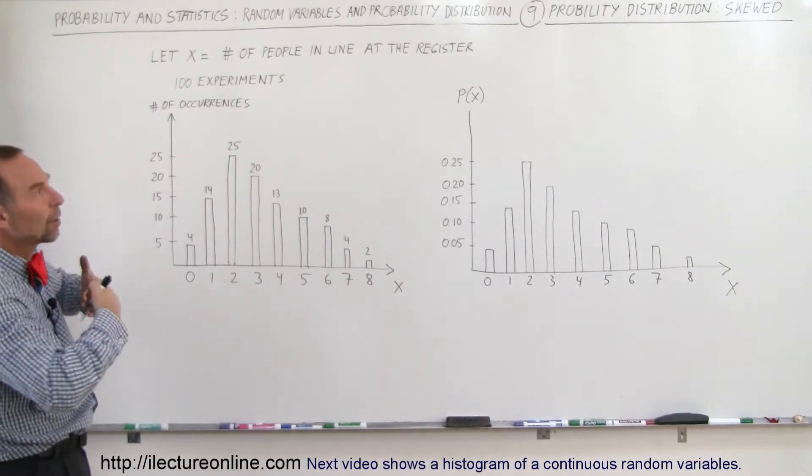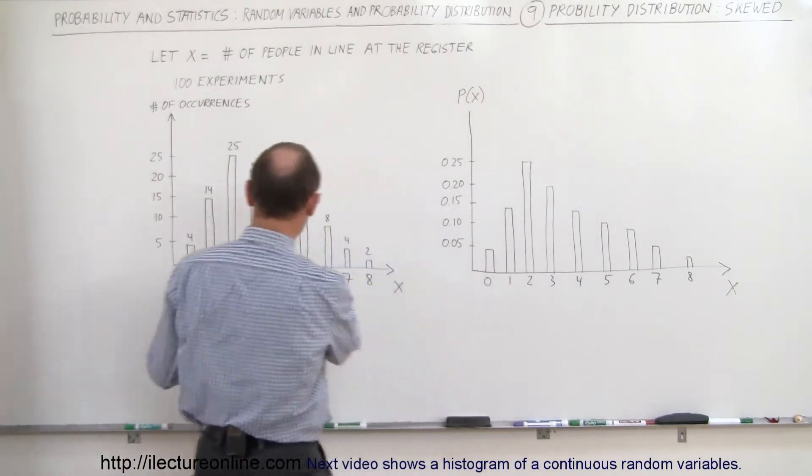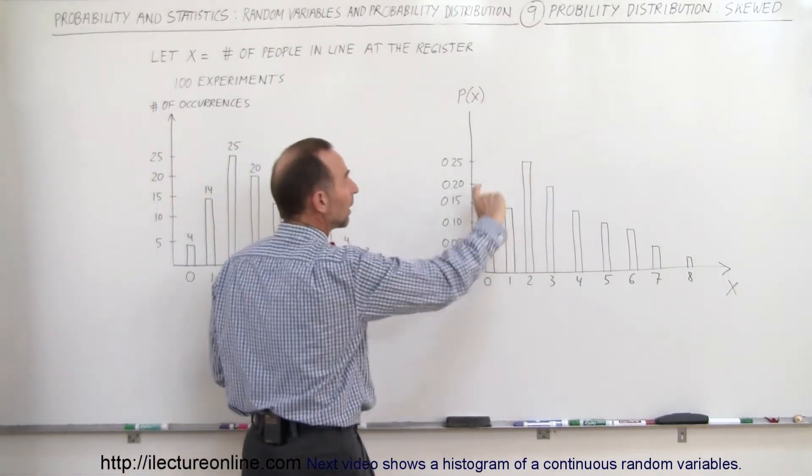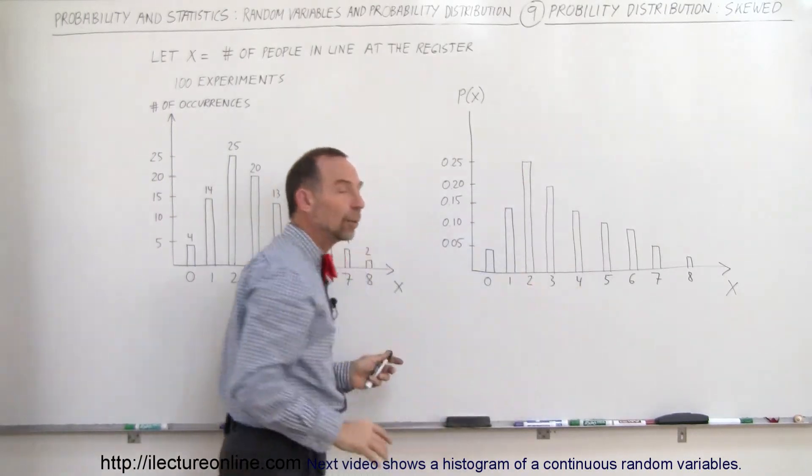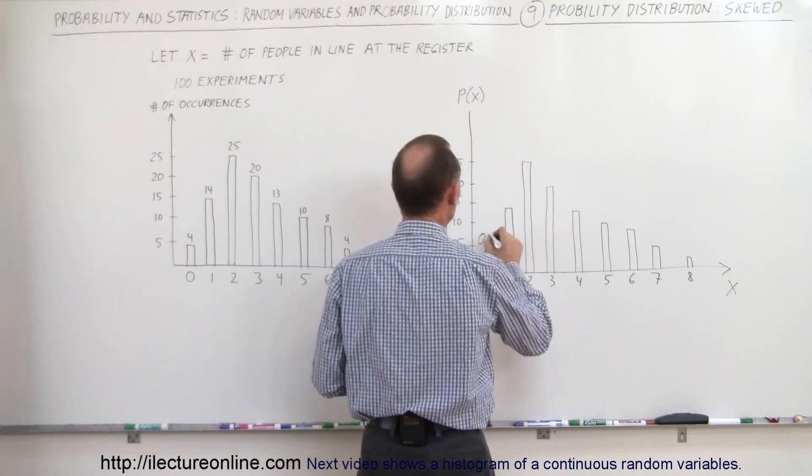If you then turn that into what we call a probability distribution graph, then it looks like this. Again, the shape looks exactly the same, but notice everything has now been normalized such that when we add up all the totals, it will add up to exactly one. So this would be 0.04, this would be here 0.14, 0.25, 0.2,